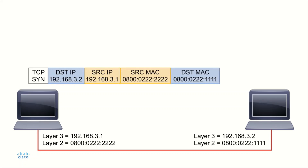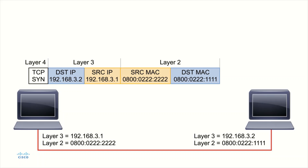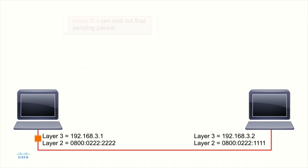Layer two builds the frame. In the frame we have: the original TCP SYN — that's the layer four transport layer information; the source and destination IP addresses — that's the network layer or layer three; and the source and destination MAC addresses — that's layer two data. The source and destination MAC are specific addresses — this is not a broadcast, this is a unicast. Layer two sends that pending packet out across the wire.